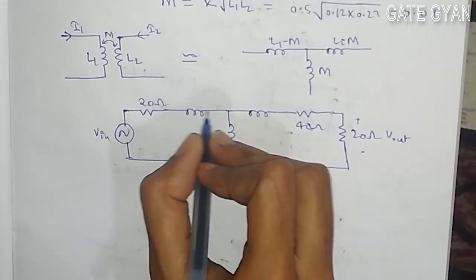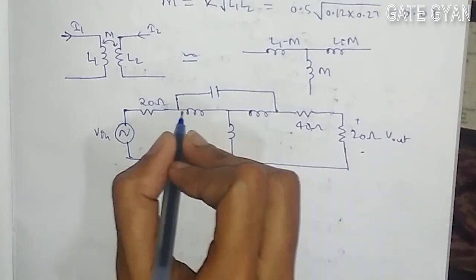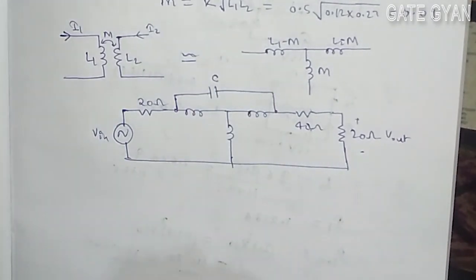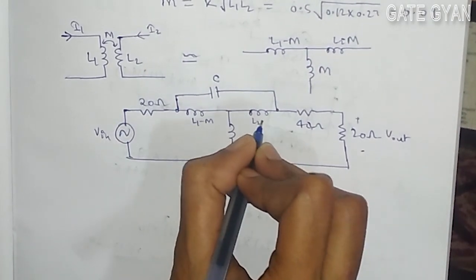This is my C which I have to find, this is my L1 minus M, L2 minus M and M.